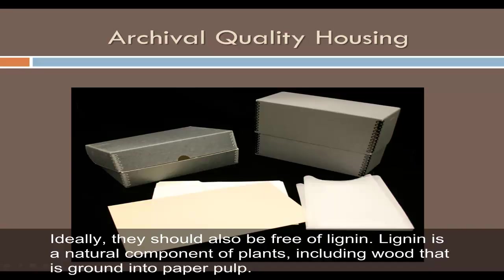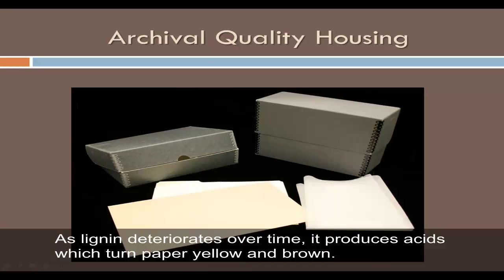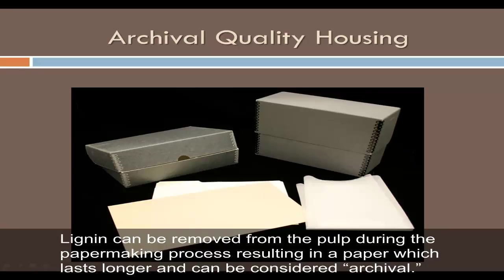Ideally, materials should also be free of lignin. Lignin is a natural component of plants, including wood that is ground into paper pulp. As lignin deteriorates over time, it produces acids which turn paper yellow and brown. Lignin can be removed from the pulp during the papermaking process, resulting in a paper which lasts longer and can be considered archival.